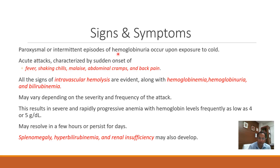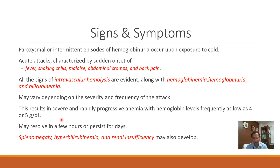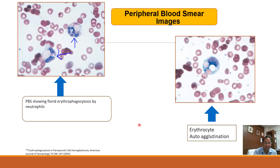Signs and symptoms are paroxysmal — intermittent episodes of hemoglobinuria. Acute attacks are characterized by fever, shaking chills, malaise, abdominal cramps, and back pain. All signs of intravascular hemolysis are present: hemoglobinemia, hemoglobinuria, bilirubinemia, decreased haptoglobin, and increased bilirubin. Severe, rapidly progressive anemia with hemoglobin frequently as low as 4–5 g/dL may occur. A characteristic peripheral smear finding is neutrophilic or monocytic erythrophagocytosis, and sometimes auto-agglutination similar to cold agglutinin disease.